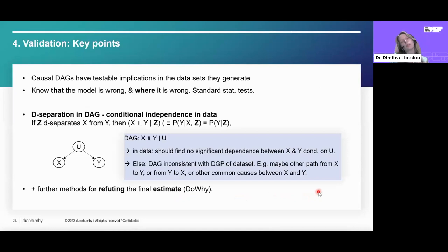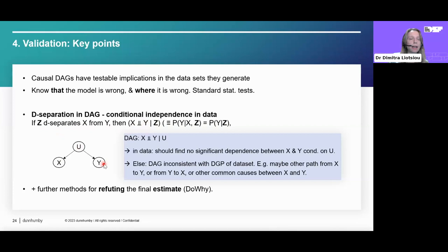Once we've estimated a causal effect, we want to validate our causal assumptions against the data. Causal diagrams have testable implications in the data sets they generate — d-separation in the DAG implies conditional independencies in the data. When Z d-separates X from Y, then X is conditionally independent of Y given Z. We can check these implications against our data using standard statistical tests. If we find a dependence where the DAG implies independence, the DAG is inconsistent with the data generating process, suggesting there may be another path from X to Y, or other common causes.